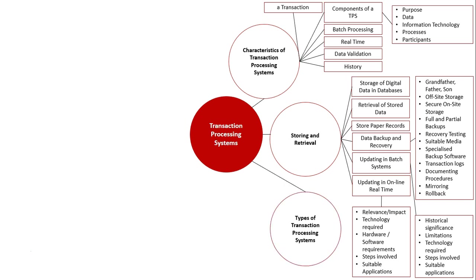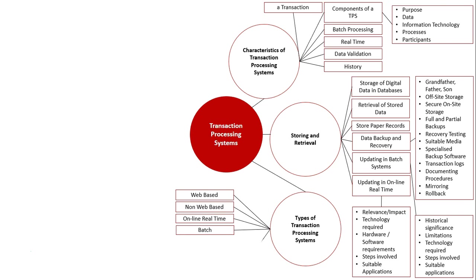The next focus area is types of transaction processing systems. We look at web-based and non-web-based systems — the distinction being that one uses the internet whereas the other uses a private network. We also look at online real-time processing, where the system is on a network and things are being updated from multiple nodes all accessing a database. Batch processing lets data accumulate, and then at a set period all those transactions are updated and processed at once, usually through an automated process.